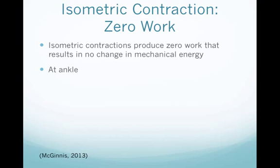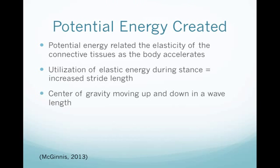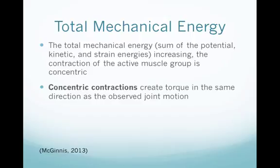We see some eccentric muscle action through the cycles, and isometric action mainly at the ankle. As the person goes through takeoff, flight, and landing, potential energy is created as we see an increase in vertical displacement, also due to potential energy in the connective tissues as the body accelerates. We have stored elastic energy during stance, which increases during stride length. The center of gravity moves up and down in a wave, creating potential energy. The total mechanical energy of the sprinter is the sum of potential, kinetic, and strain energies, which is increasing — mainly due to concentric contractions that create torque in the joints as the person accelerates.